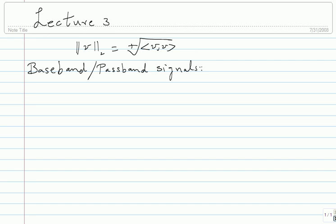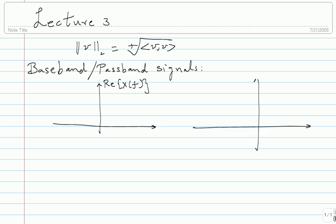If you have a real baseband signal, how will its Fourier transform look? The Fourier transform is going to have a real part and an imaginary part. The real part will have even symmetry — symmetry about 0. Baseband means the non-zero values of the spectrum are going to be around the origin, say within minus W to plus W.